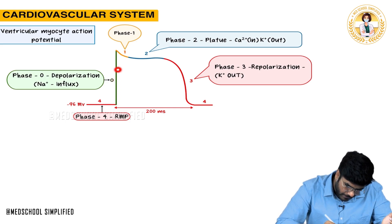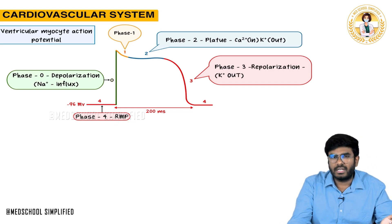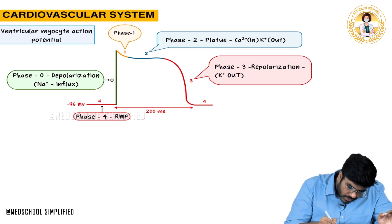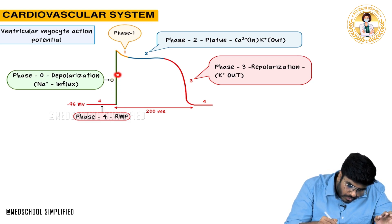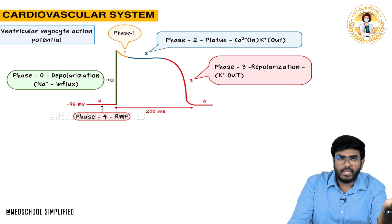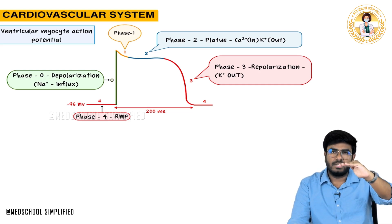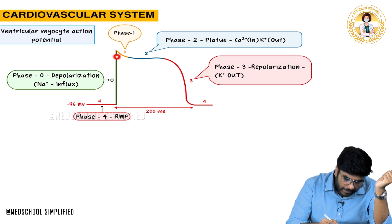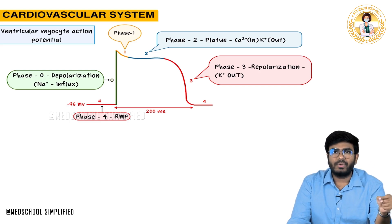Depolarization is happening here, and this depolarization is considered as phase 0. Phase 4 is the resting membrane potential at minus 90 millivolts. During depolarization, from minus 90 millivolts, the cell moves towards the positive side to around plus 20. Why is this depolarization happening? Because of the entry of sodium ions.